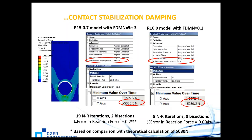With the new version starting from version 16, you get much better results in fewer iterations. In version 15 it did 19 iterations; in version 16 it only did 8 iterations with 0.1 to 0.2 bisections. The error in the reaction force is much less — the theoretical calculation was 5080 N, and ANSYS version 16 gives 5080.2 newtons, which is 0.004 percent error.